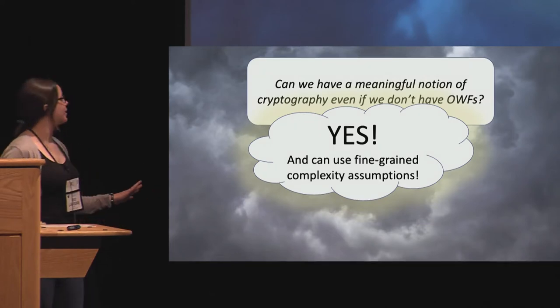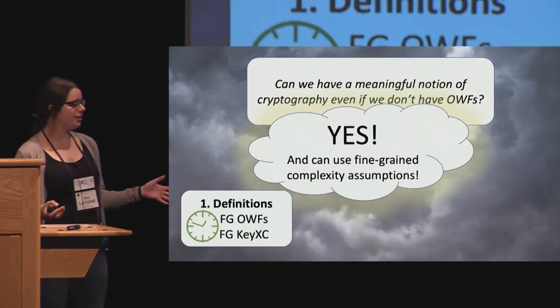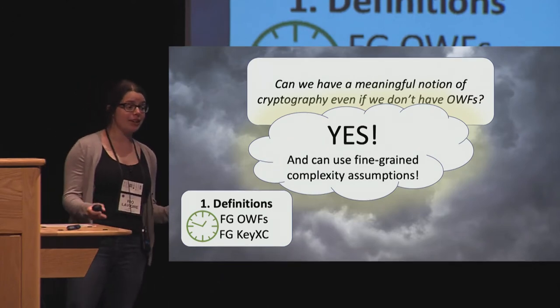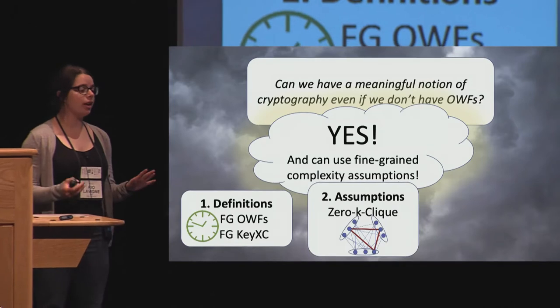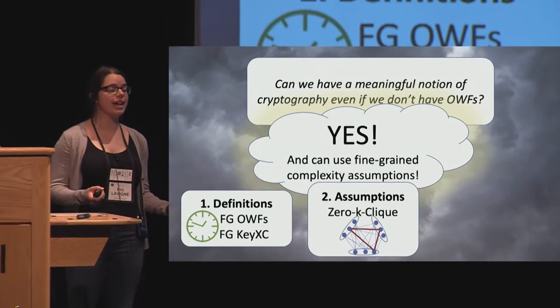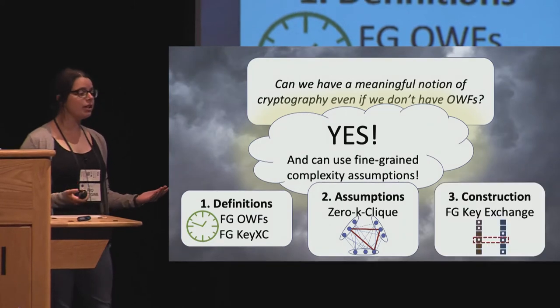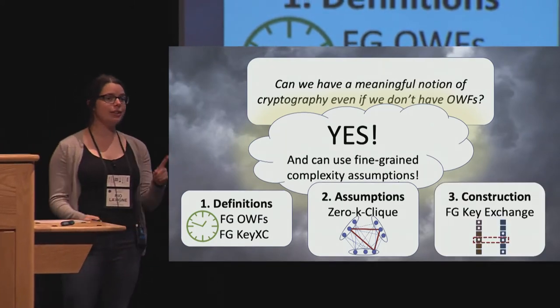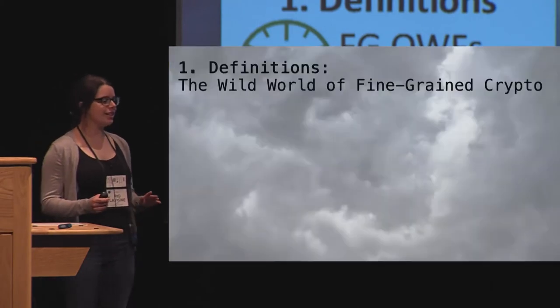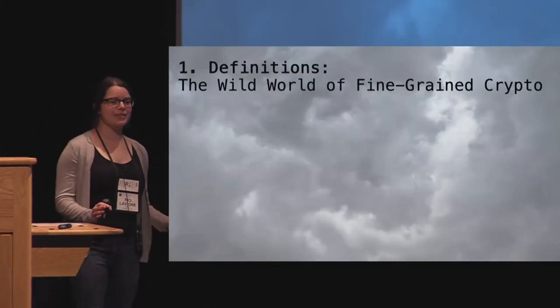In this presentation, we're going to go over some definitions for what we mean exactly by fine-grained one-way functions and a fine-grained key exchange. We're going to go over our complexity assumption, our average case assumption, which will be based off of zero k clique. And then we're going to go over our construction, including the security reduction. So, let's get started in this wild world of fine-grained crypto.